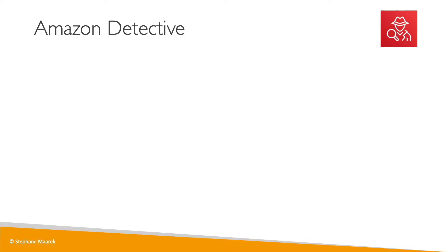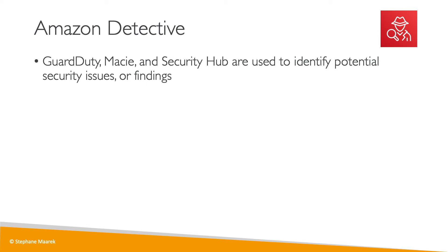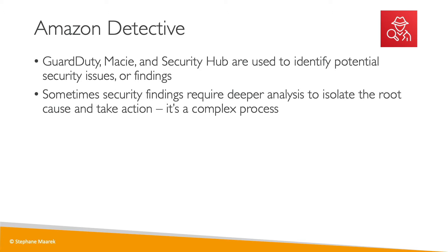A very short lecture on Amazon Detective. When you have services such as GuardDuty, Macie, and Security Hub that are used to identify potential security issues or findings, you need to find how these happen and get to the root cause. Sometimes the deeper analysis to answer the root cause can be long and complicated — it's a complex process where you need to analyze data from different places and link it together.